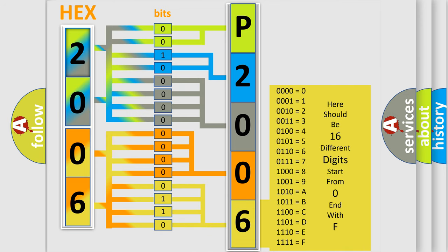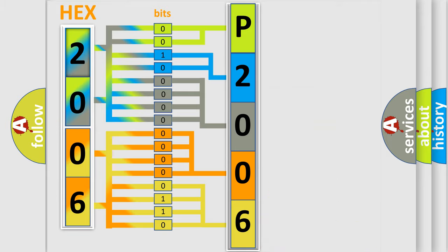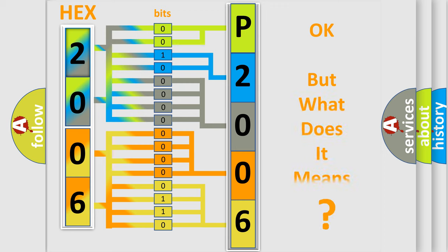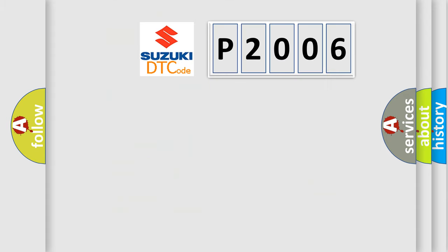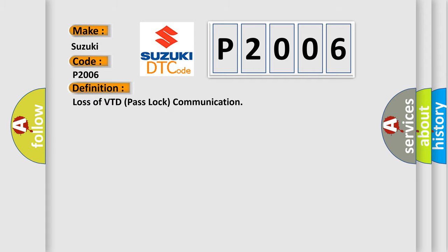We now know in what way the diagnostic tool translates the received information into a more comprehensible format. The number itself does not make sense to us if we cannot assign information about what it actually expresses. So, what does the diagnostic trouble code P2006 interpret specifically for Suzuki car manufacturers? The basic definition is: Loss of VTD PassLock communication.